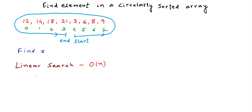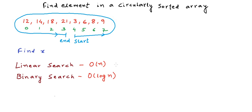Whenever we have sorted data and we have to search for something, we should always think about binary search as one of the possible approaches. Binary search executes in O(log n) — at most we make log n comparisons to find our element in the array. O(log n) is the best time complexity to have for a solution, so let's see if we can apply binary search in some form to solve this problem.